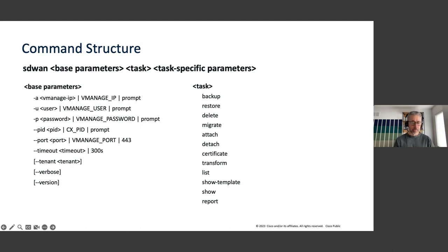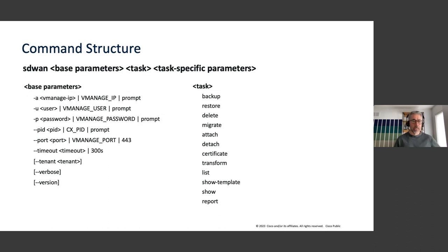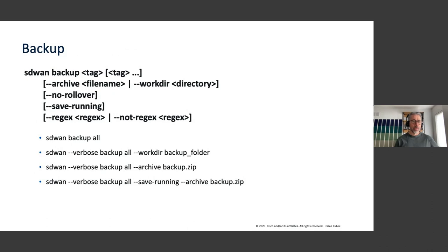When you install SASTRE you access it via the 'sdwan' command. The base structure of the CLI is: first you have some base parameters where you can provide credentials and optional flags like verbose to show more task details, then you provide the task name such as backup or restore, and then you fill in the task-specific parameters depending on which task you'd like to run.